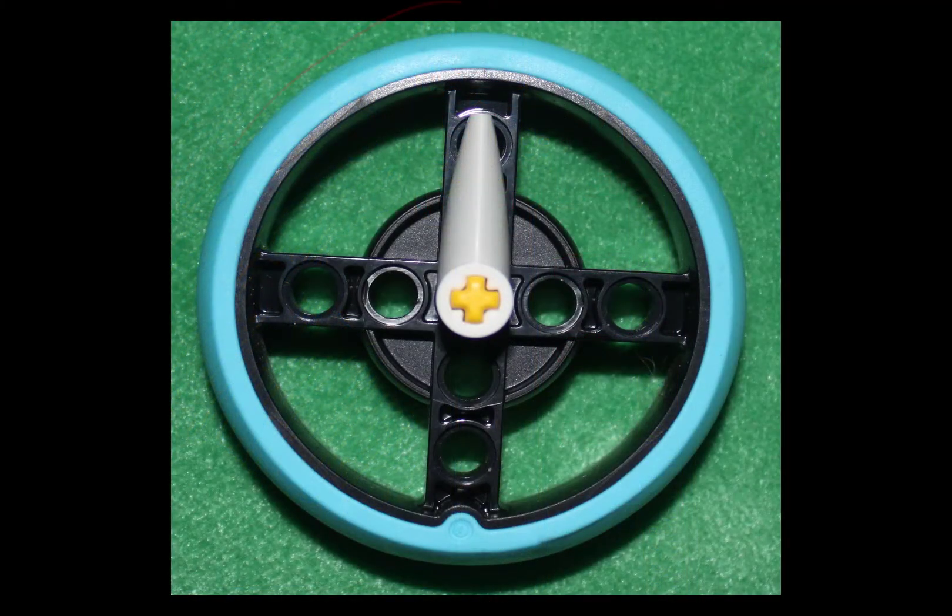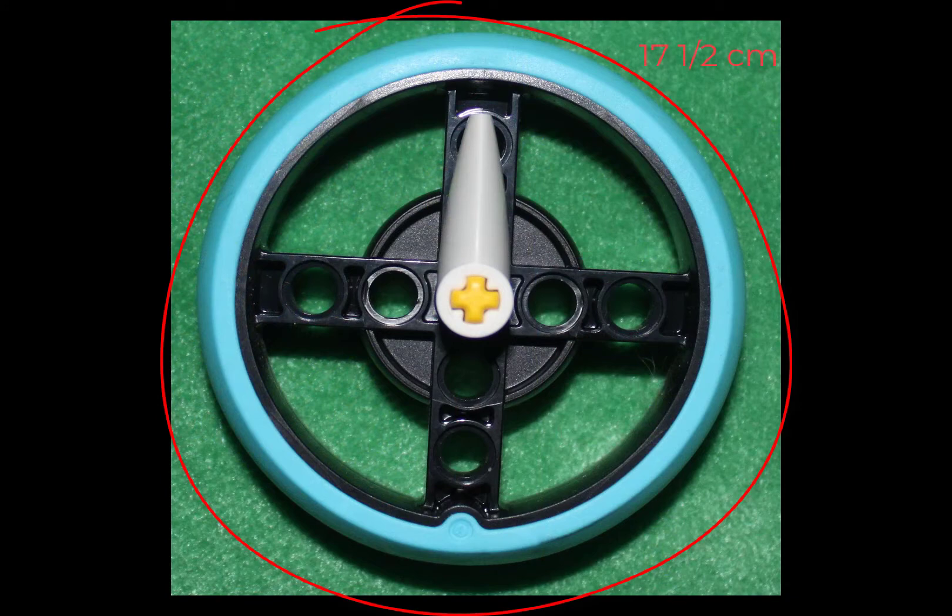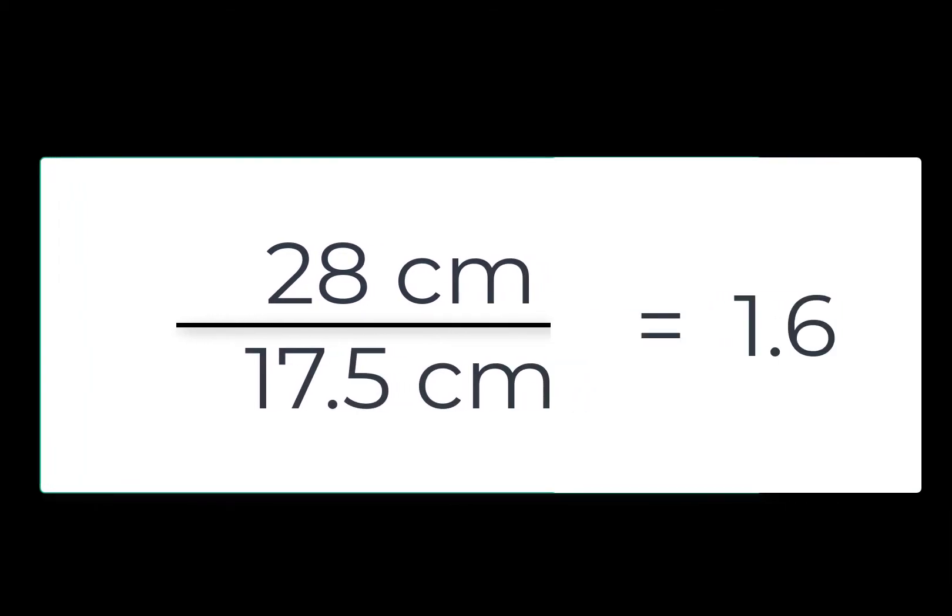But we know that Chariot's wheels are 17 and a half centimeters around. Let's do some math. 28 centimeters divided by 17 and a half is 1.6, which is the number of times we need Chariot's motor axles to turn.